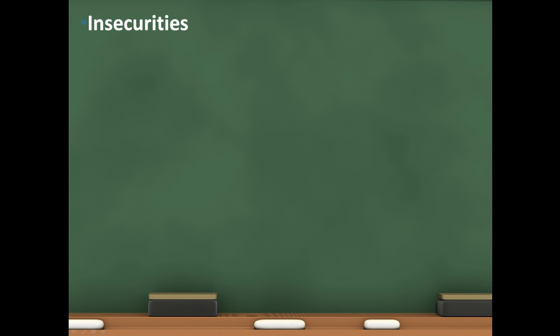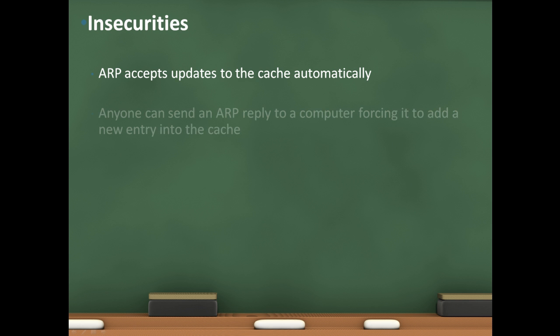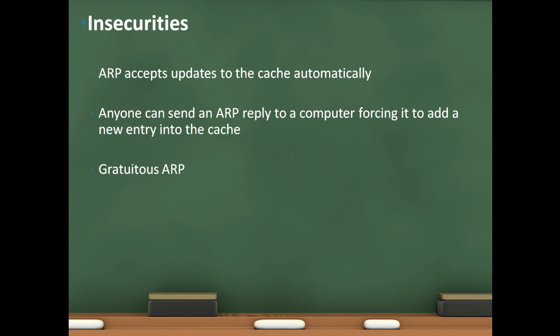Although ARP is important, it has little security. ARP dynamically accepts all ARP replies to its host and therefore updates its cache automatically. Anyone can send an ARP reply to any computer forcing it to add a new entry into the cache. This is also called Gratuitous ARP, where a device can send out an ARP reply with no request.